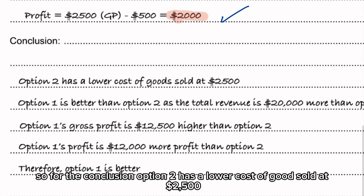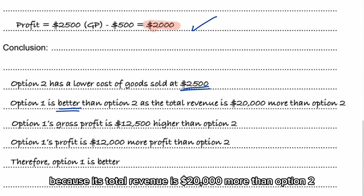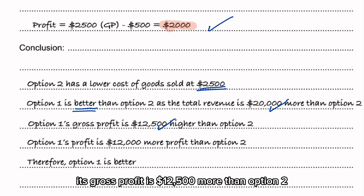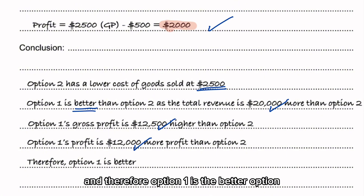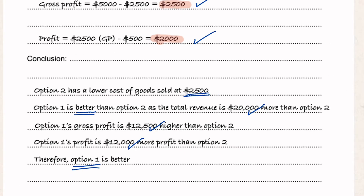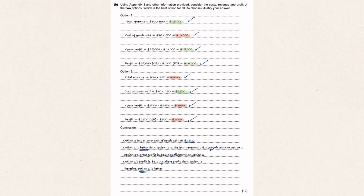For the conclusion: option two has a lower cost of goods sold at $2,500, however option one is the better choice because its total revenue is $20,000 more than option two, its gross profit is $12,500 more, and its net profit is $12,000 more. Therefore, option one is the better option. I hope that helped — have a good day!